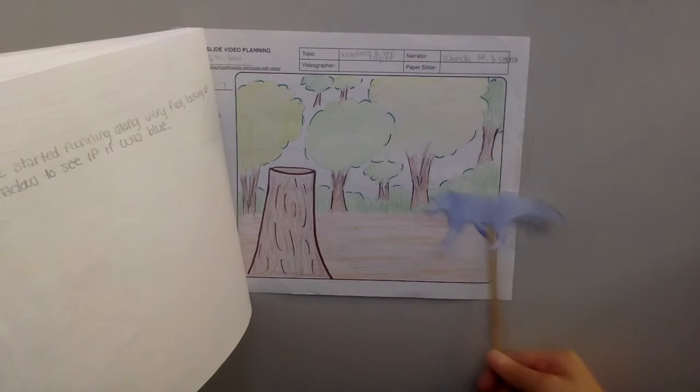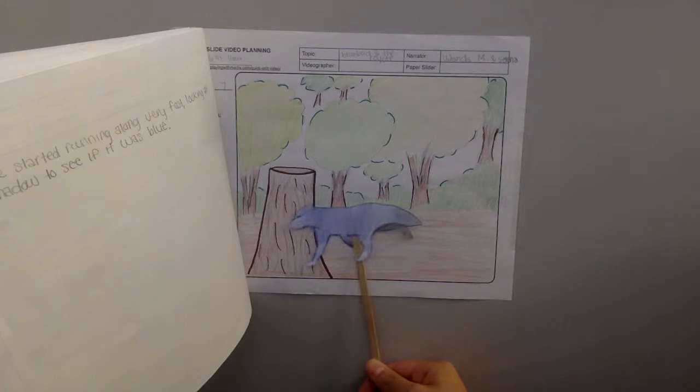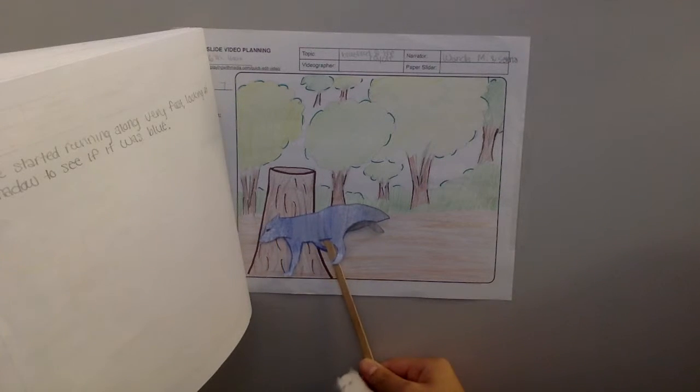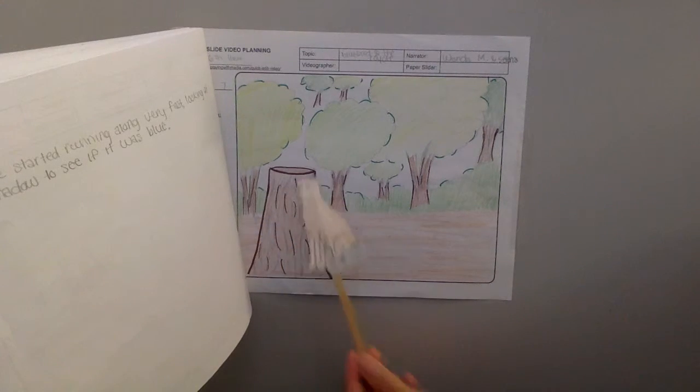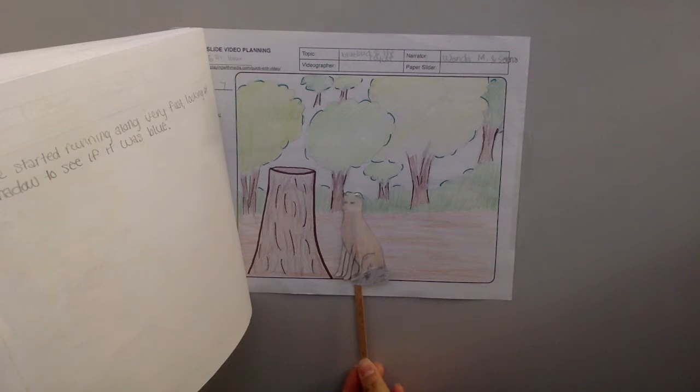He was not watching the road, and presently he ran into a stump so hard that it threw him down upon the ground, and he became dusty colored all over. And to this day, all coyotes are the color of dusty earth.